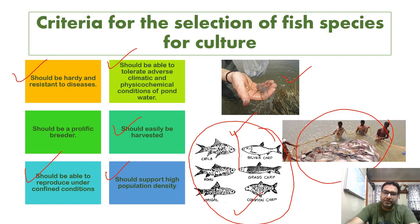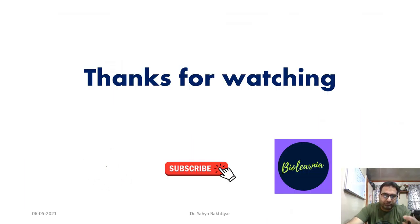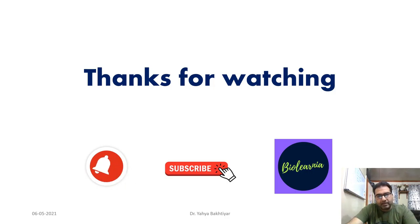To summarize, the most important qualities of a culturable fish are: it should be tasty and palatable, have a high growth rate, low bone-to-flesh ratio, be disease-resistant, able to accept both live feed and artificial feed, hardy, easy to harvest, adaptable to confined water, and compatible with other species in polyculture systems.